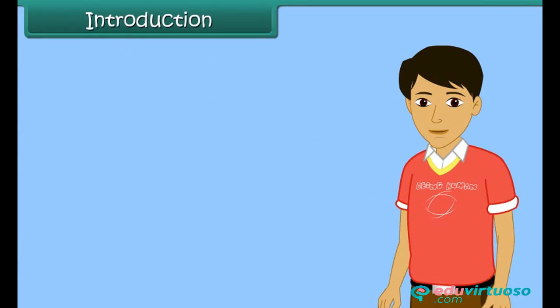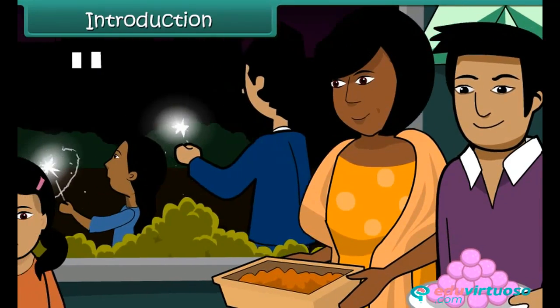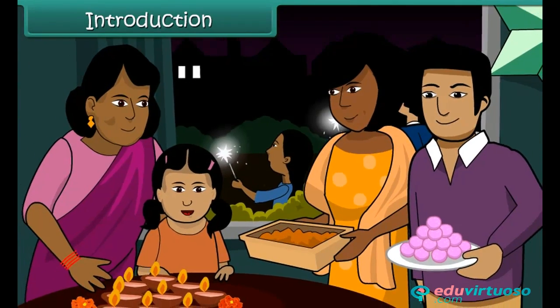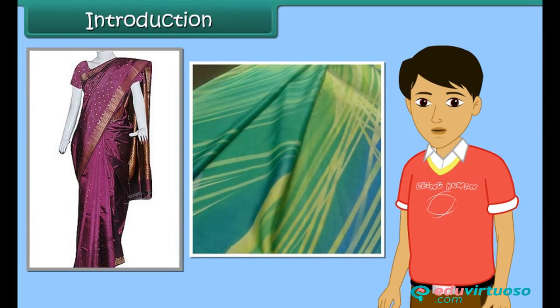Who doesn't like wearing garments made of silk? The shimmer of silk and its soft touch makes it a choice of one and all. Silk saris of India are world-famous. In India, silk is considered auspicious and is associated with festivals and celebrations — be it Diwali, Durga Puja, a betrothal, wedding, or arrival of a new member in the family. Silk adds grace to the occasion. In this lesson, we will learn about the characteristics and types of silk, and also understand how silk fabric is obtained from silkworms.